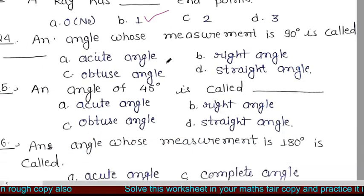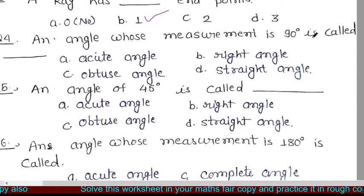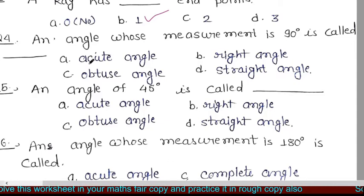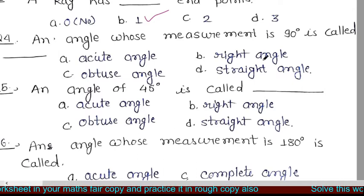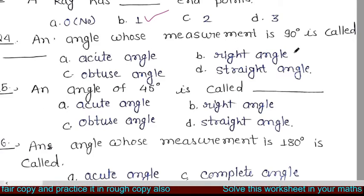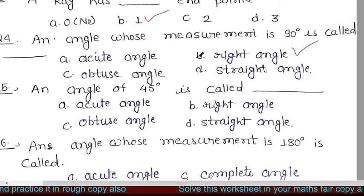Next question is: an angle whose measurement is 90 degrees is called what? ऐसा angle जिसका measurement 90 degree होता है वह कहलाता है। Your options are acute angle, right angle, obtuse angle, and straight angle. तो जिस angle का measurement 90 degree होता है वह होता है right angle.